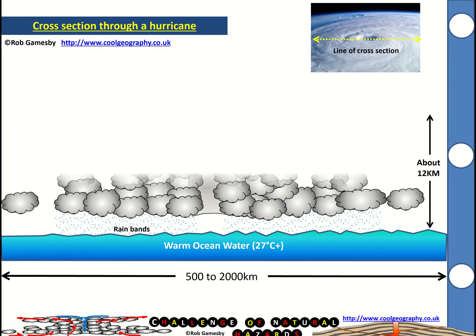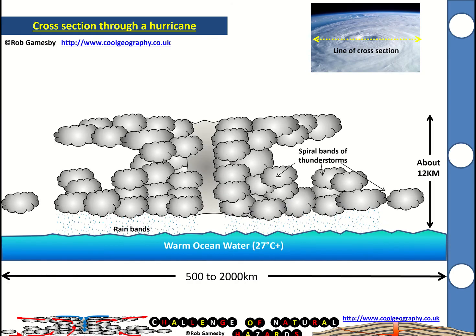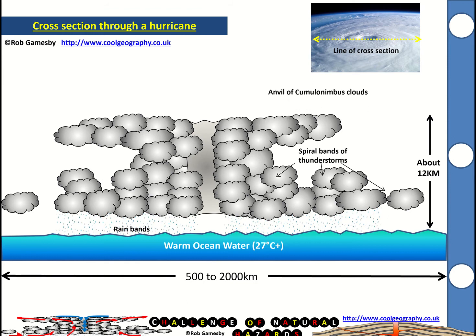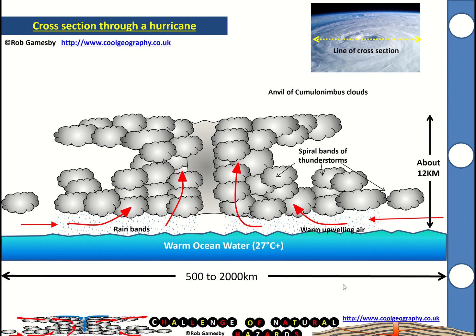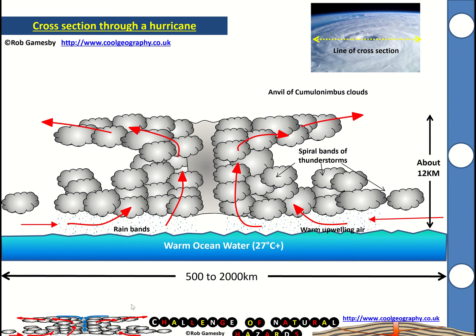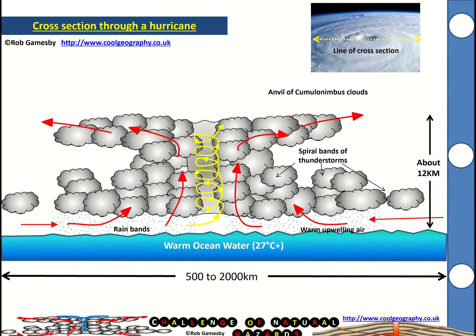In terms of the structure of a hurricane, it's made up of spiral bands of thunderstorms above that warm ocean water of 27 degrees. We get an anvil of cumulonimbus clouds. We get warm upwelling air that rushes in from higher pressure areas outside of the storm into the lower pressure areas, and then when it hits the tropopause, it spreads out to create an anvil of cumulonimbus clouds.